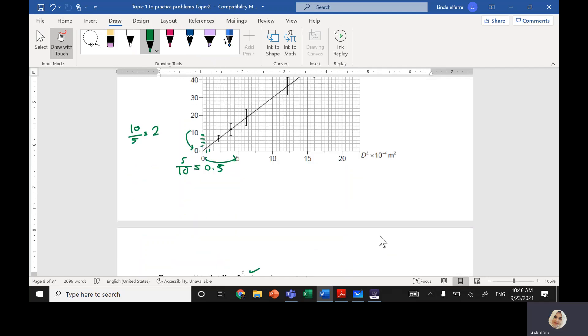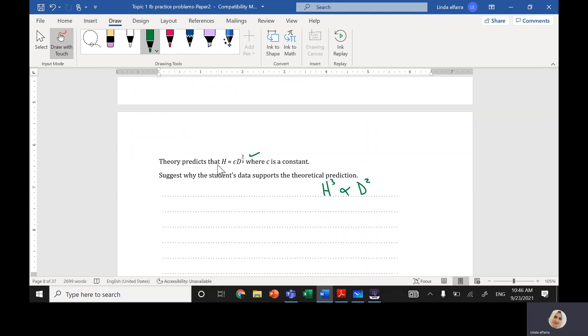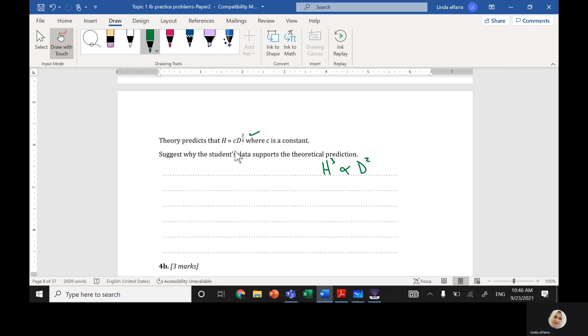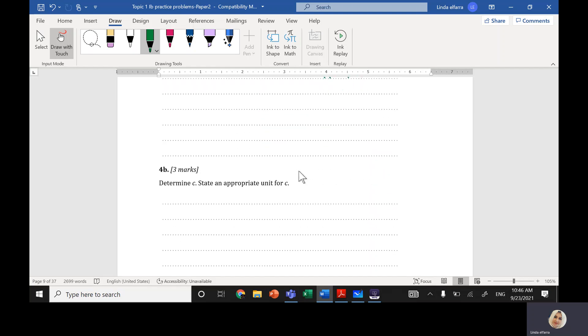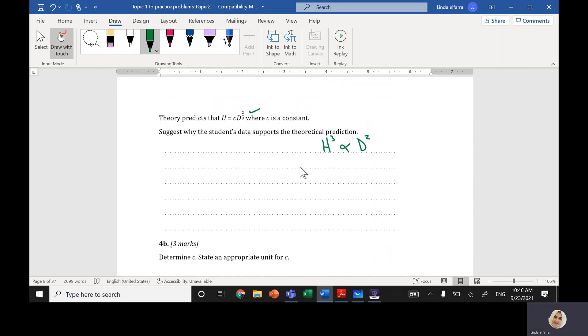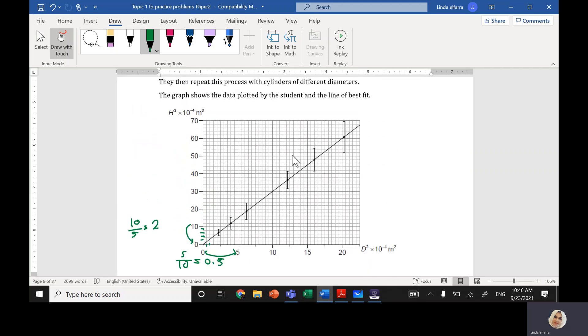Look at the equation. I have h equals c times d to the power 2 over 3. So let's write this equation here. Let's write it here on the top: h equals c d to the power 2 over 3.